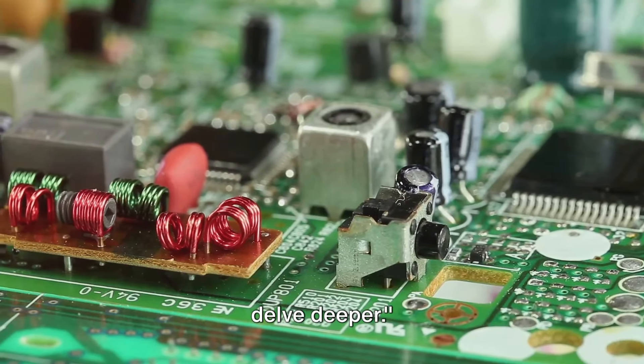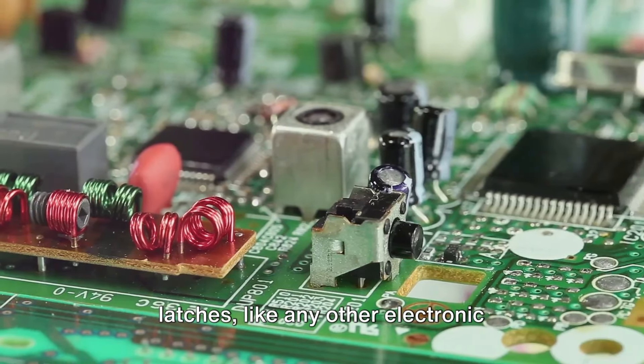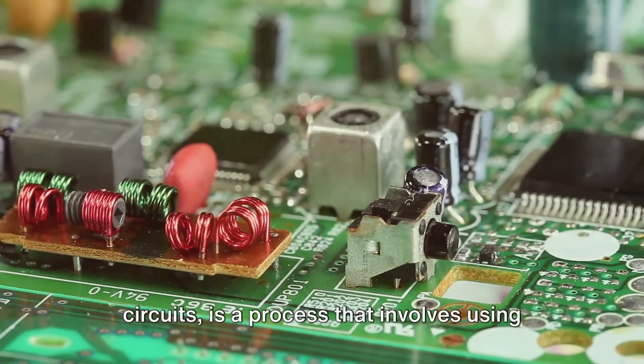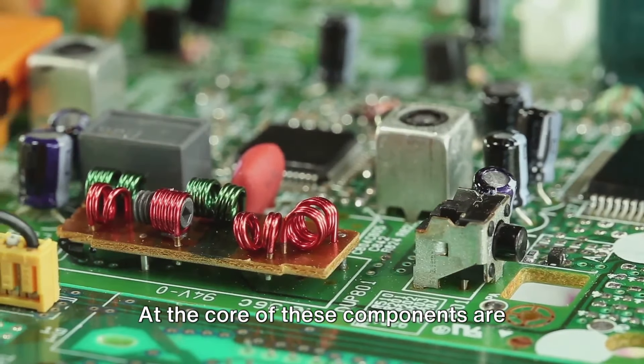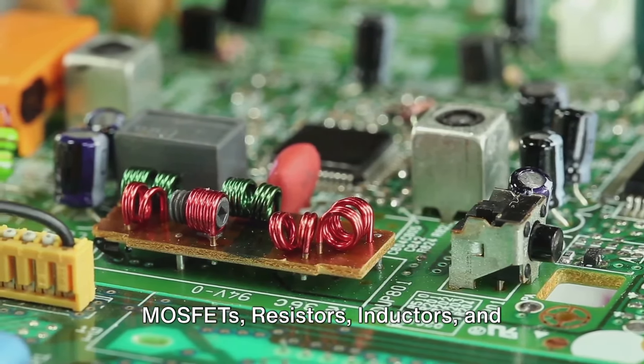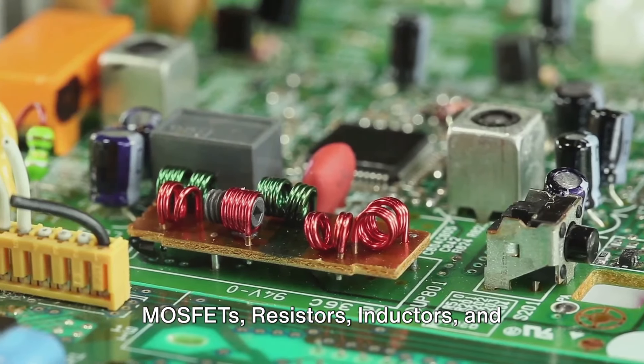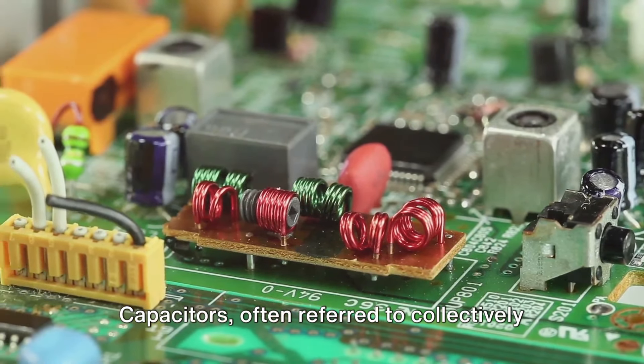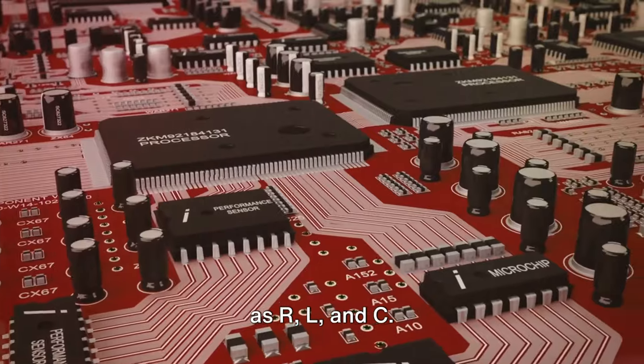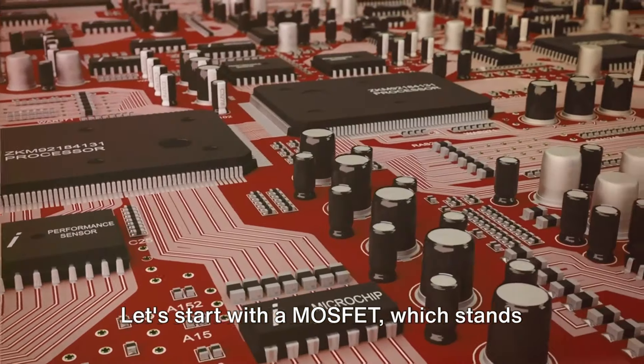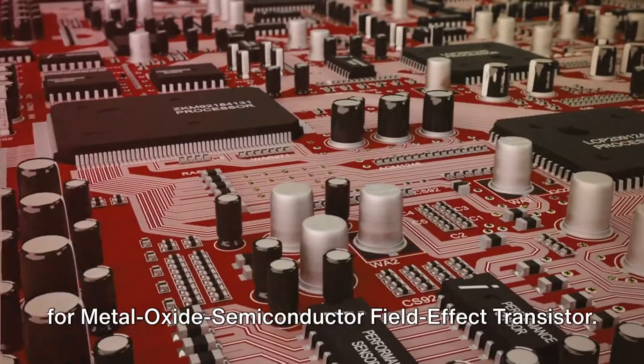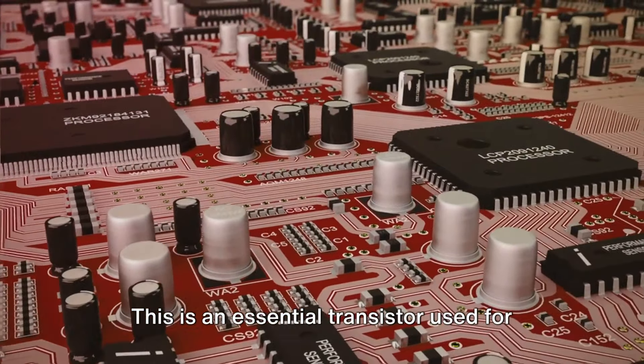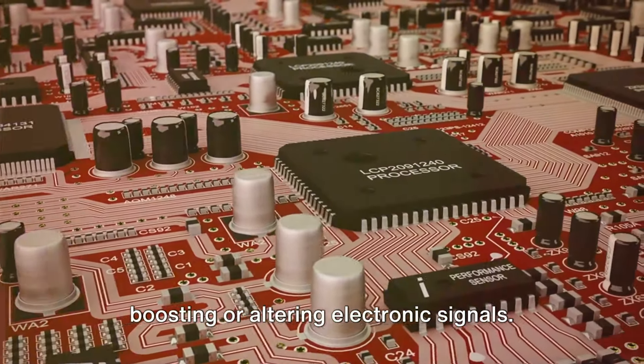But how do we make these latches? Let's delve deeper. Latches, like any other electronic circuits, is a process that involves using a set of specific components. At the core of these components are MOSFETs, resistors, inductors, and capacitors, often referred to collectively as R, L, and C. Let's start with a MOSFET, which stands for Metal Oxide Semiconductor Field Effect Transistor. This is an essential transistor used for boosting or altering electronic signals.